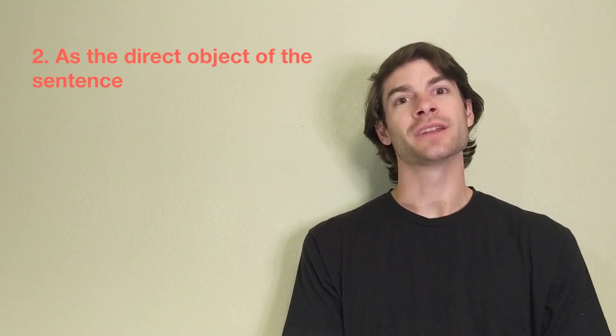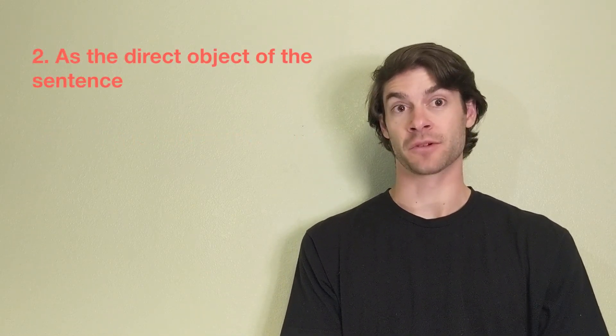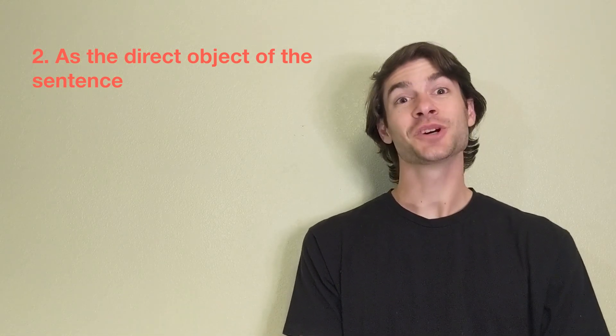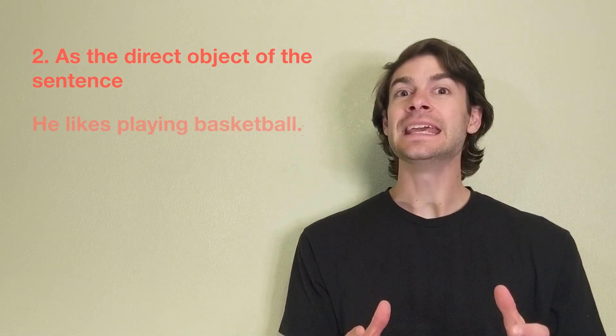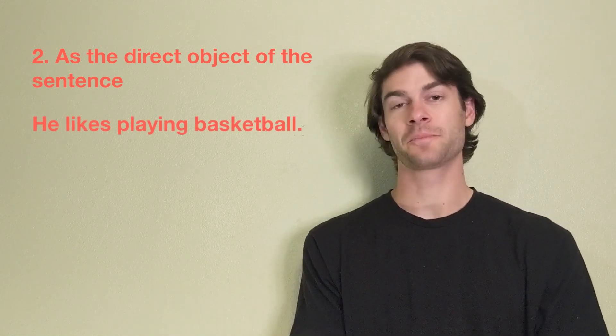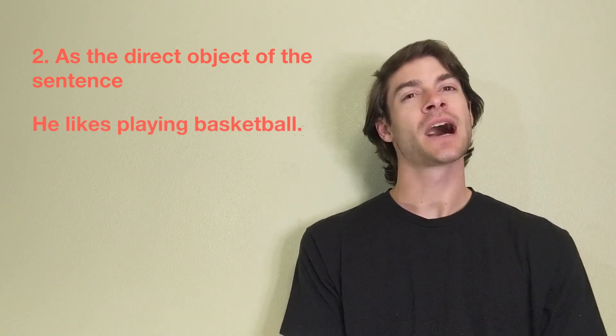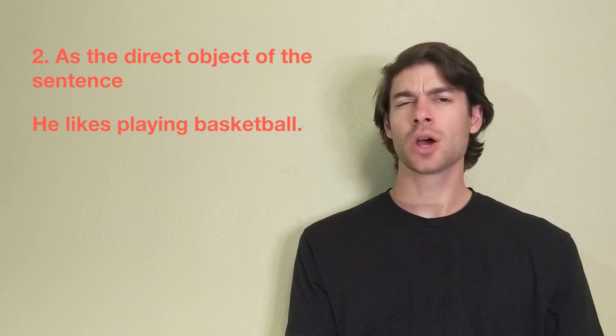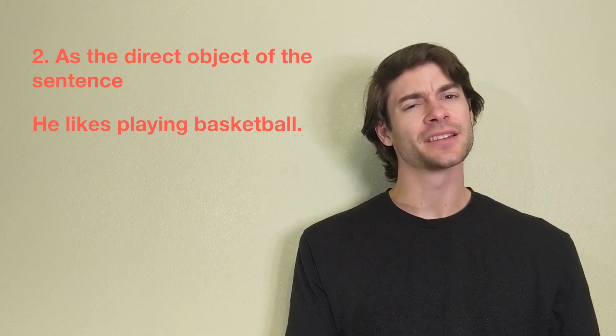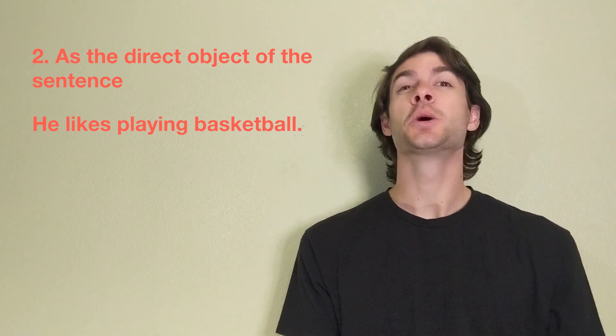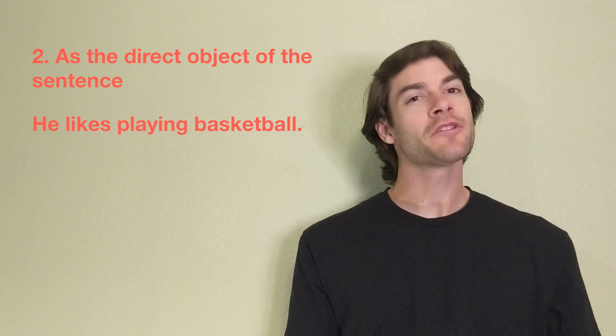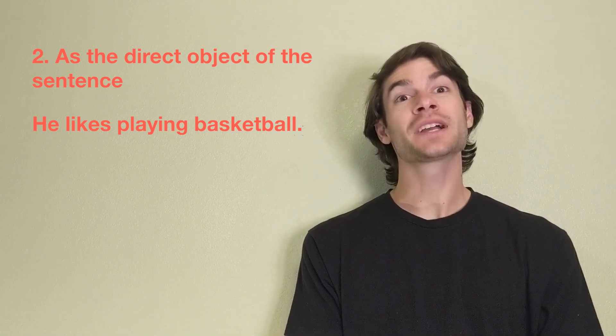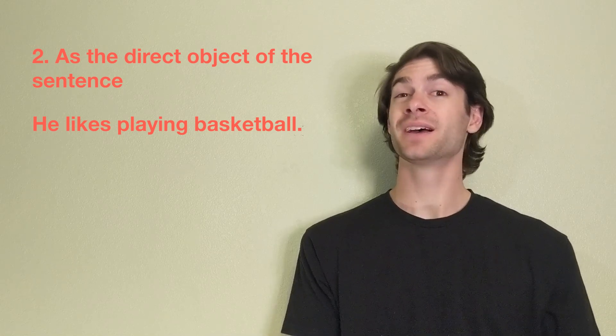To use a gerund as the direct object of a verb, our second form, let's look at the sentence, he likes playing basketball. In this sentence, our subject, he likes, we can ask, what does he like? He likes playing. Therefore, our gerund, playing, is the direct object of the verb, like.